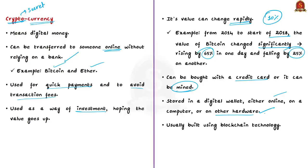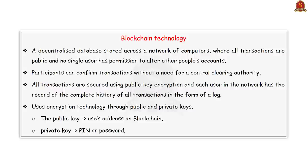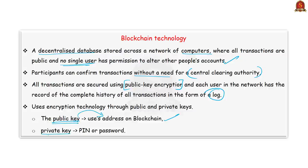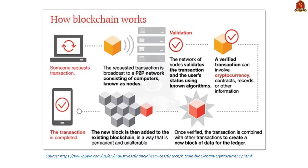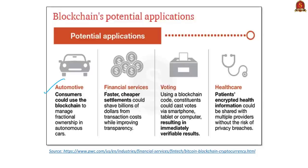All transactions are secured using public key encryption. Each user in the network has a record of the complete history of all transactions in the form of a log. Blockchain security uses encryption technology through public keys and private keys. The public key acts as the user's address on the blockchain, and the private key acts as a PIN or password permitting only the owner to access their Bitcoin or other digital assets. There are many potential applications of blockchain technology including automotives, healthcare, fund transfers, settling trades, and voting.